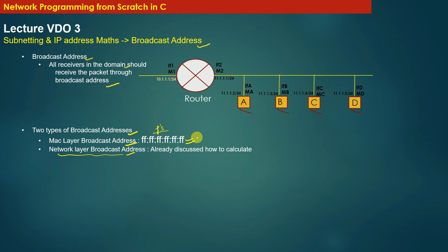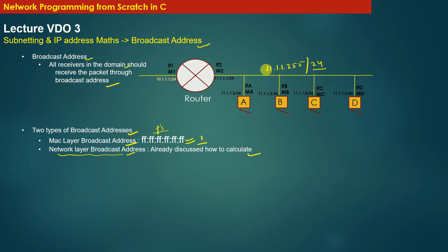It means all 48 bits of the broadcast address will be one. Whereas at the network layer, we have already discussed how to calculate the broadcast address of a particular subnet given an IP address and a mask value. In our topology we have shown a subnet in which machines A, B, C, and D are present. The broadcast address of this subnet will be 11.1.1.255/24, and the network ID will be 11.1.1.0/24.